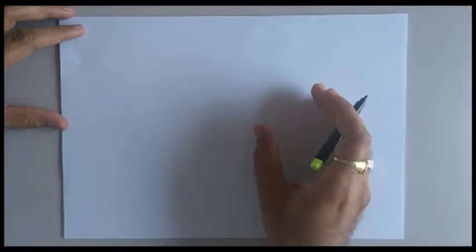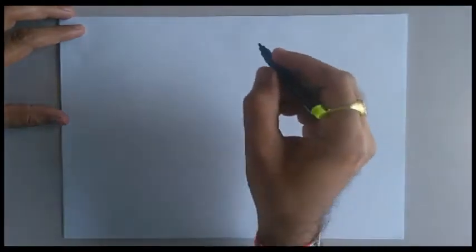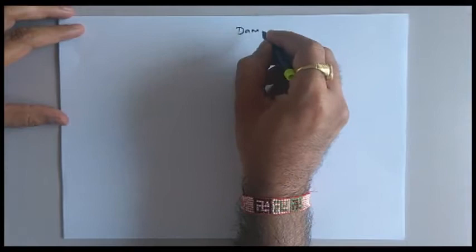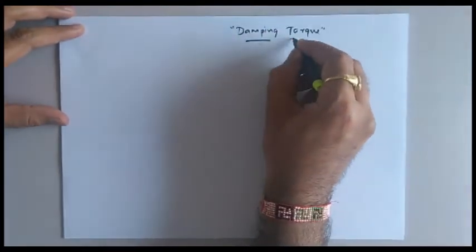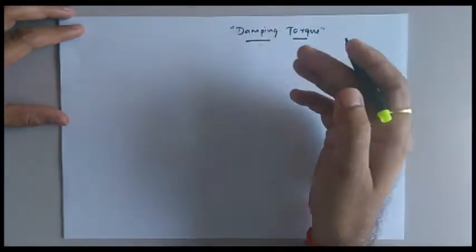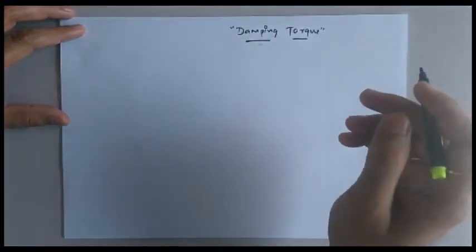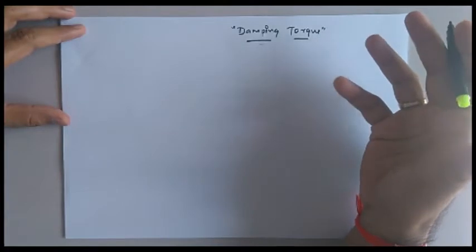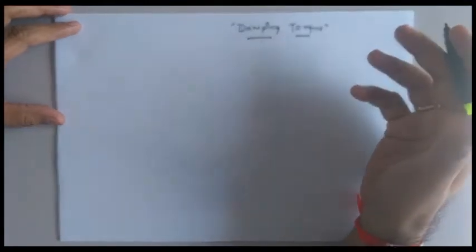Once again, welcome back. In this lecture we will discuss the third operating component of a torque which is required for the faithful operation of any analog instrument, and that is the concept of damping torque. In the previous lecture we discussed in detail about deflection torque and controlling torque, and we discussed different mechanisms to generate the required controlling torque — either with the help of spring control mechanism or with the help of gravity control mechanism.